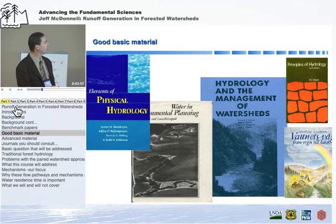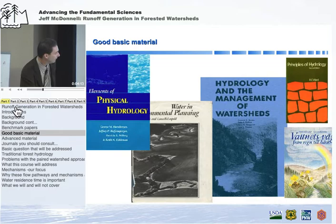There's quite a new book, Elements of Physical Hydrology, by George Hornberger at UVA and colleagues there — it's quite good. This is probably the best book of all. Unfortunately, it's in Swedish. It's used a lot by folks in Europe and in Sweden, not surprisingly, but it's really excellent. I've only been able to get through the figures and figure captions, which are in English, but it's very good.